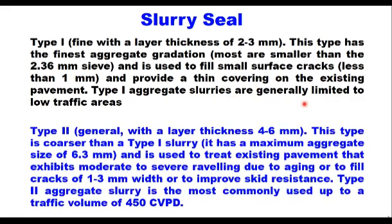Type 2 is the most commonly used — a general type of slurry seal with a layer thickness of 4–6 mm and is coarser than Type 1. It has a maximum aggregate size of 6.3 mm and is used to treat existing pavement that exhibits moderate to severe ravelling due to ageing, or to fill cracks of 1–3 mm width, or to improve skid resistance on the surface. Type 2 aggregate slurry is the most commonly used, up to a traffic volume of 450 commercial vehicles per day.